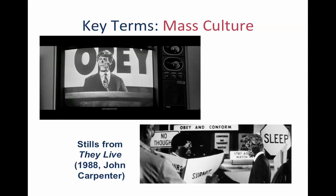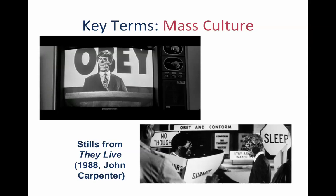Mass culture teaches us what the social norms are and enforces them. This is from the film They Live by John Carpenter — in that film, aliens have taken over American society and use the media to pacify the rest of the population. Television projects subliminal messages: obey, follow orders, conform, no thought, sleep, submit. Newspapers, films, and TV are all spreading these messages. This is very much the critical theorist's approach to popular culture — all of these mass-produced, industrially created forms of culture are seen as ways of controlling people.